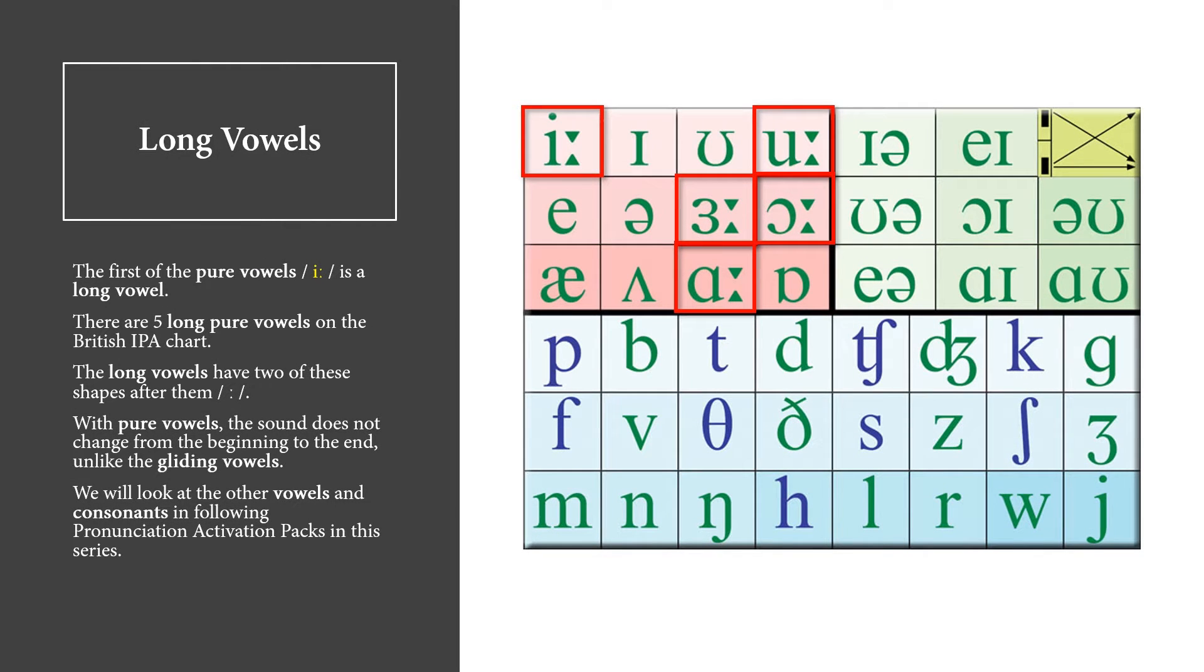Long Vowels. The first of the pure vowels, E, is a long vowel. There are five long pure vowels on the British IPA Chart. The long vowels have two of these shapes after them.